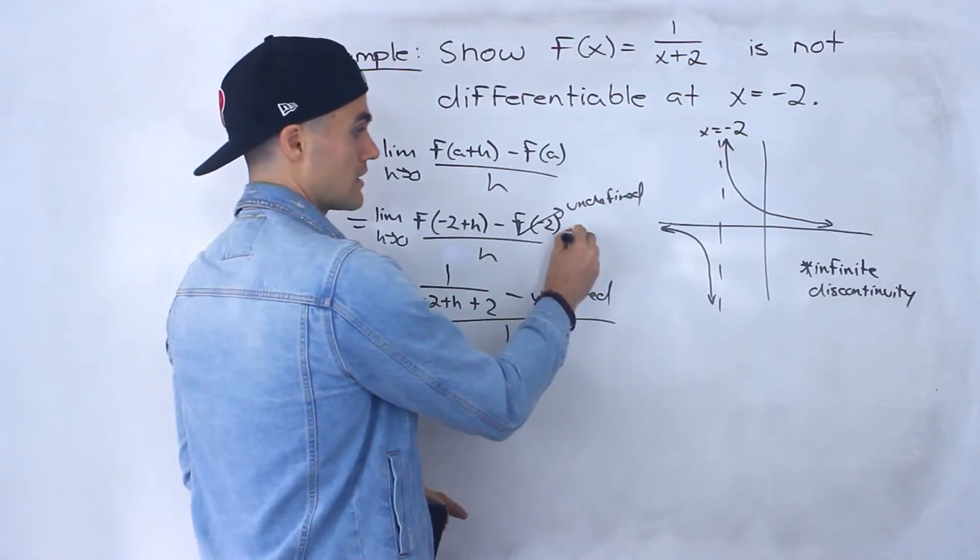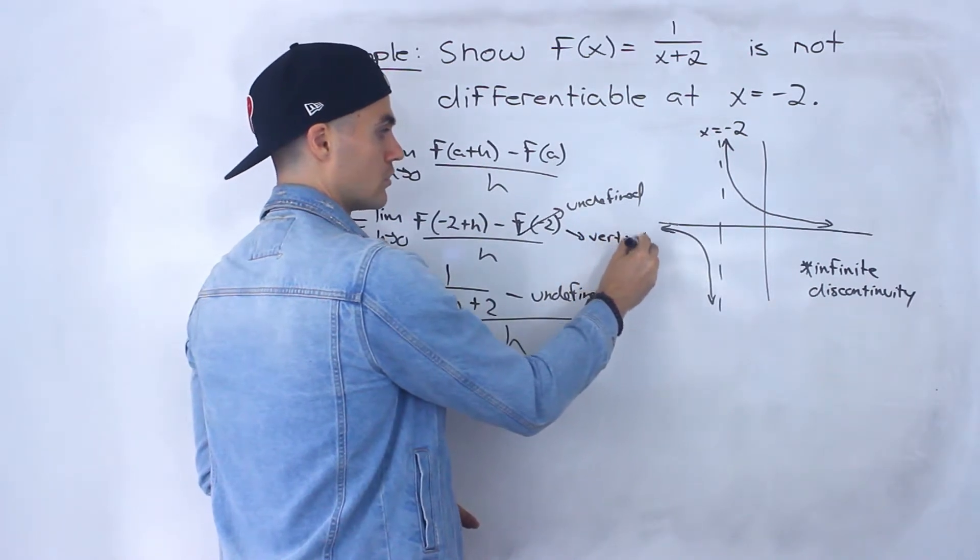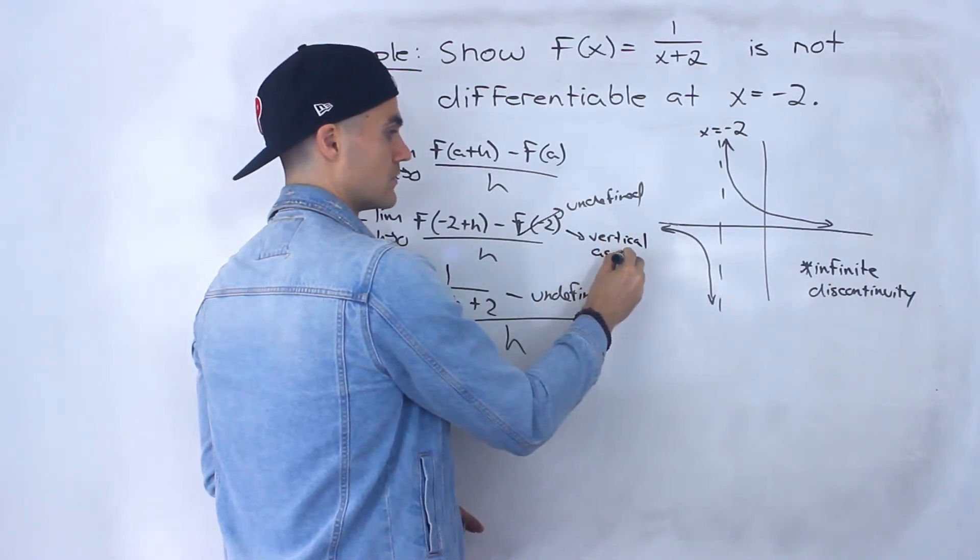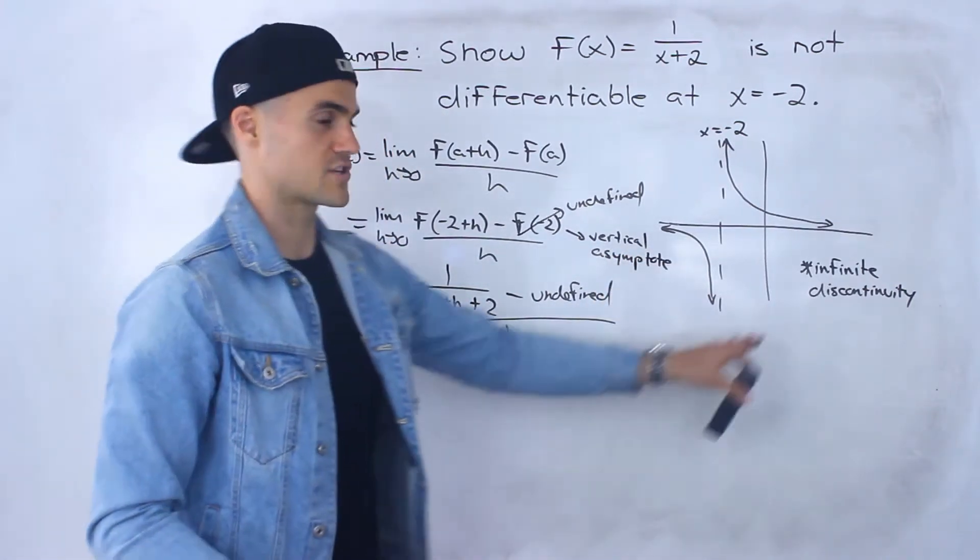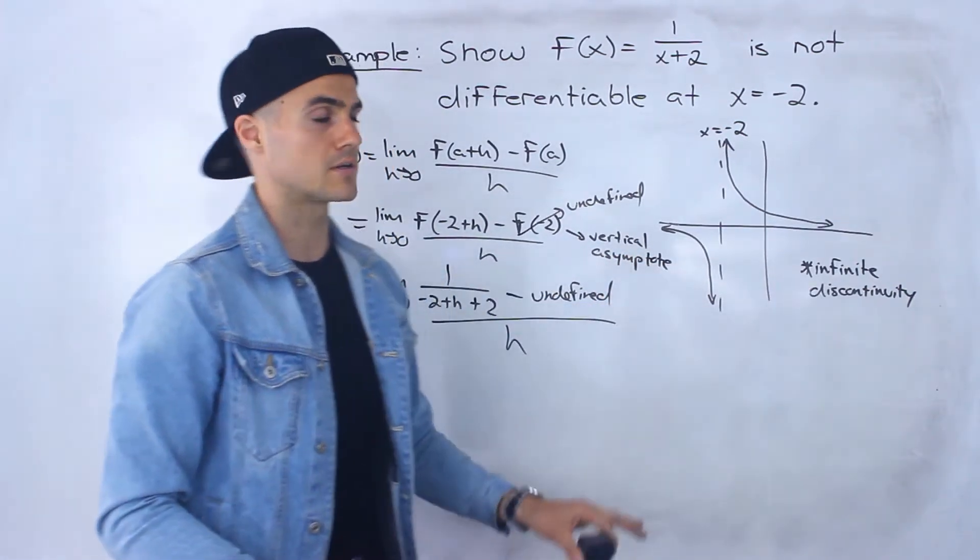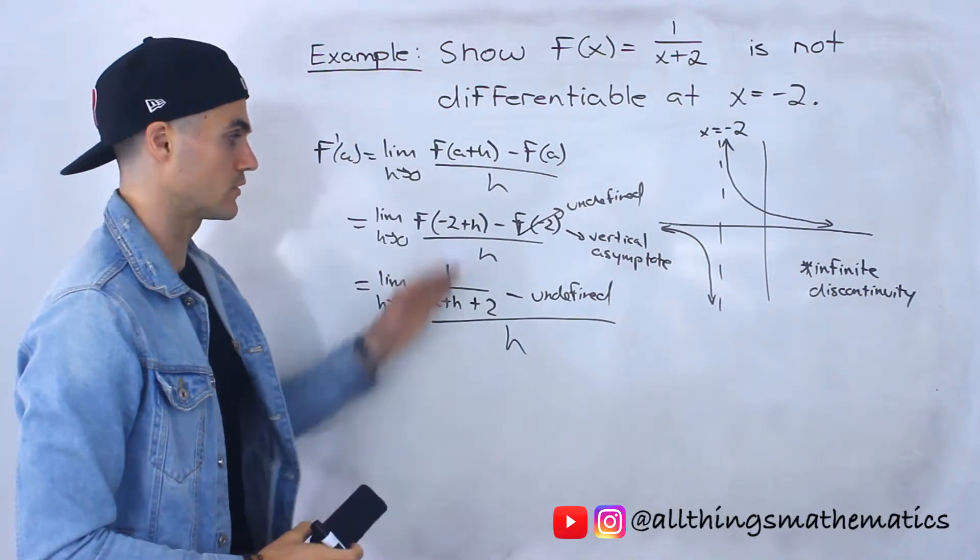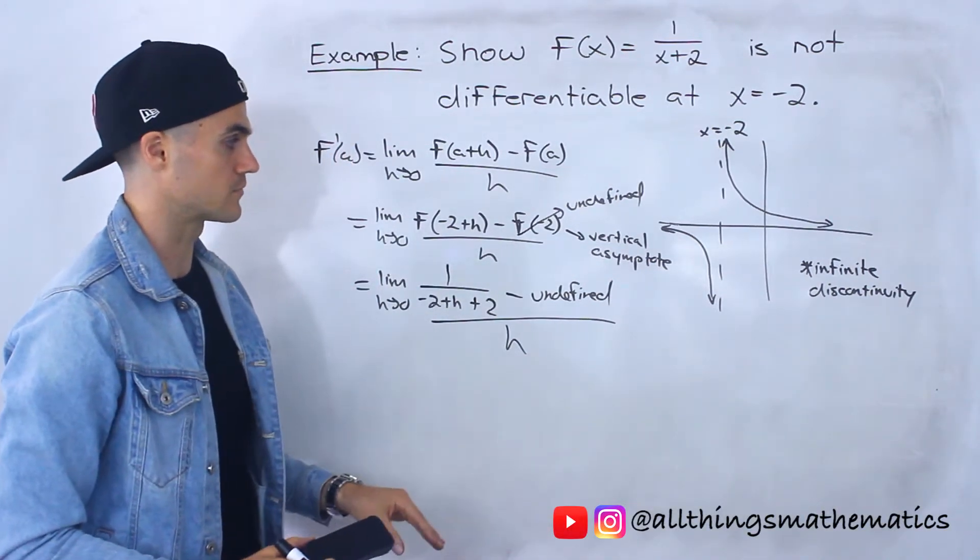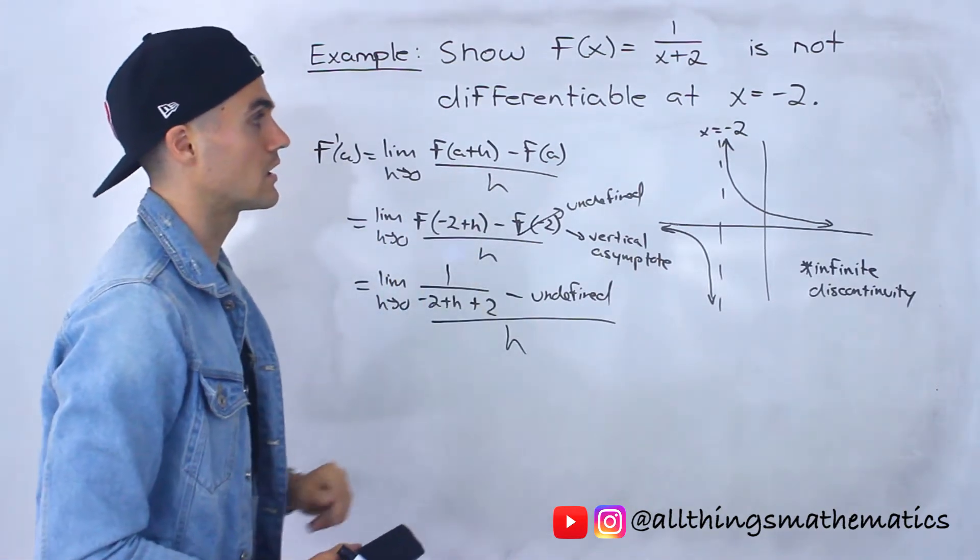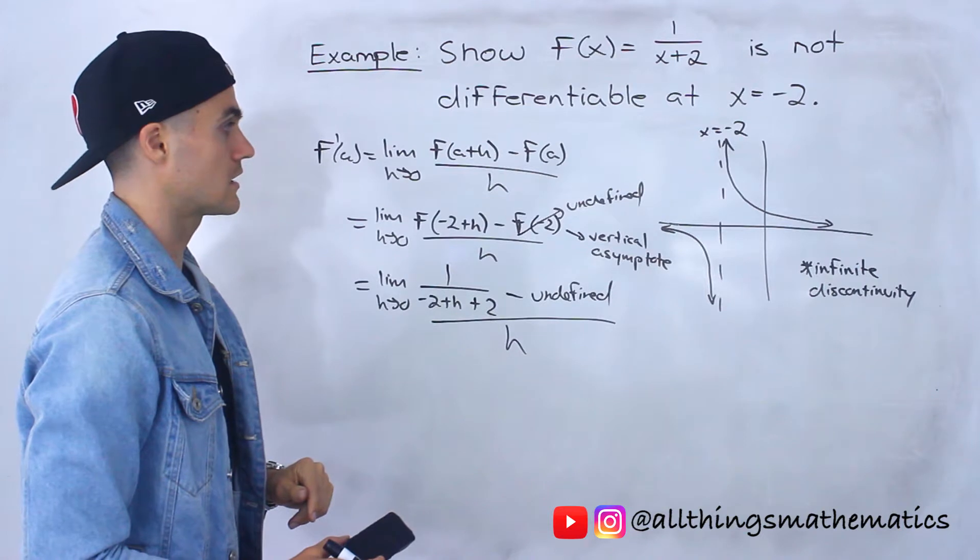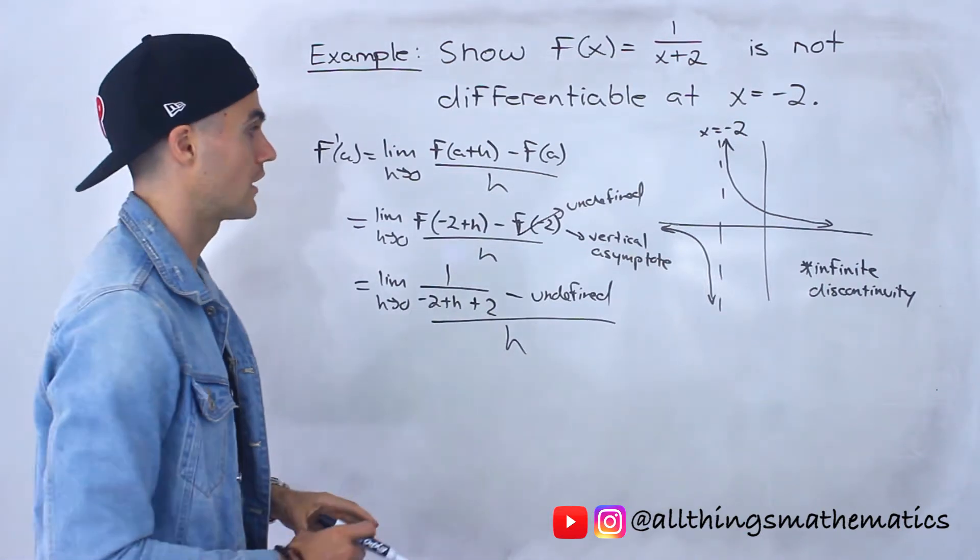There is a vertical asymptote, or there's an infinite discontinuity. So pretty simple. We don't even have to do any algebra. It's just this part of this whole limit is undefined, so it makes the whole limit undefined or non-existent.